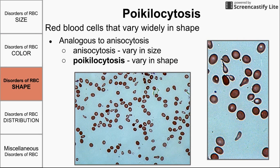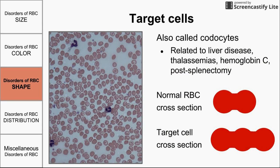Now let's jump into disorders of red blood cell shape. First, the term poikilocytosis means that you have a lot of red blood cells that vary in shape — whereas anisocytosis meant varying in size, poikilocytosis means varying in shape. On the blood smear shown, red blood cells are of very different shapes: teardrop shaped, sickle shaped, spherical, oval, and some still normal. Poikilocytosis means red blood cells that vary widely in shape.